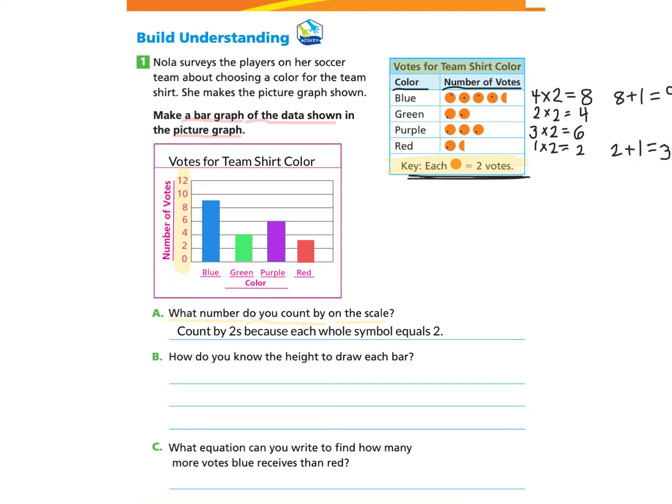Now let's take a look at part B. How did you know the height to draw each bar? We can explain our thinking to multiply two by the number of whole symbols for each color, and then count by the same number along the scale. Add one if there is a half of a symbol.